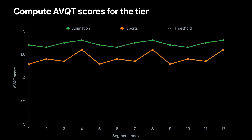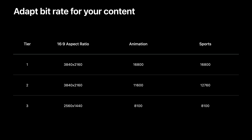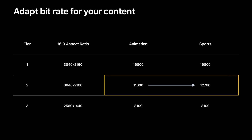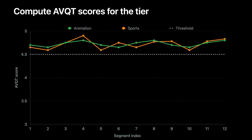We will use AVQT to compute their video quality scores. The chart shows AVQT scores for the two video sequences. For this particular tier, we expect high video quality, so we are setting the threshold to 4.5, indicating close to excellent quality. While this bit rate is good enough for the animation clip, it is not sufficient for the sports clip. So we use this feedback to adapt our bit rate target — specifically, we need to increase the bit rate for the sports clip and recompute its AVQT score. Aiming for a 10% increase, the updated scores now lie above our threshold of 4.5 and resemble the video quality of the animation content much more closely.